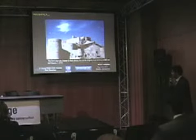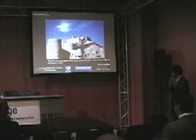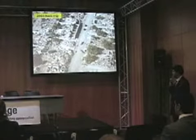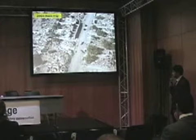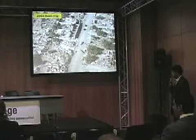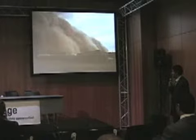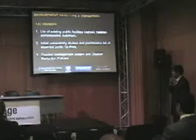Iran is an earthquake-prone country, as shown in the slides. This is a reminder of the 2003 Bam earthquake — the citadel was 2,000 years old and after the earthquake was reduced to rubble. It was a 6.2 magnitude earthquake that destroyed almost the whole city. Sandstorms are another significant hazard visible in Iran.